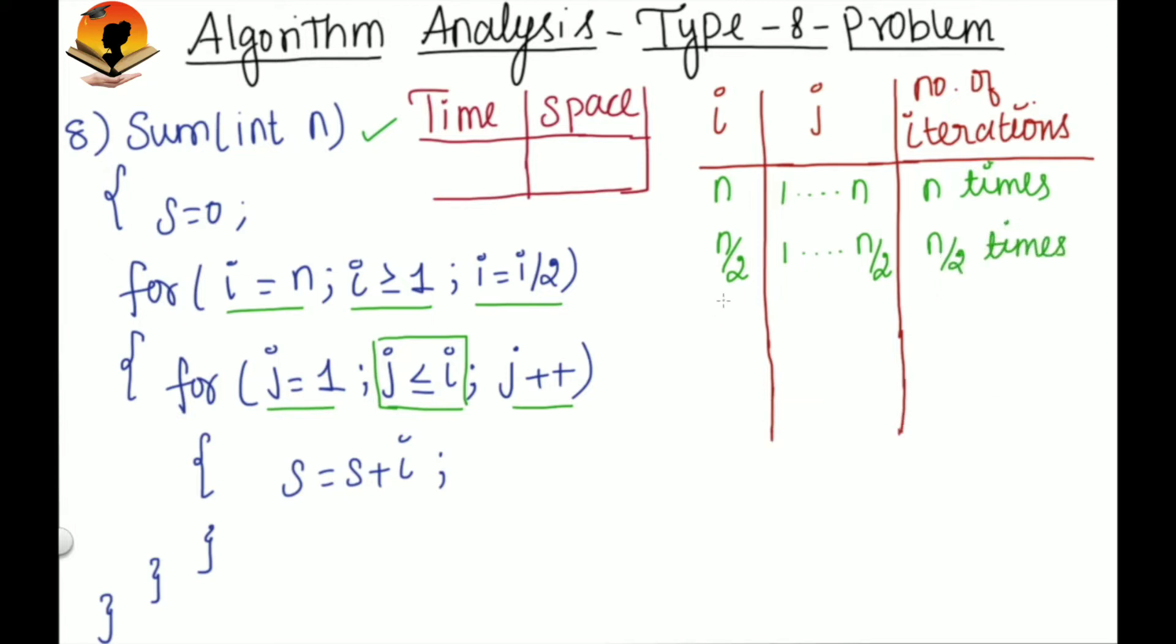And then again in the next iteration, i will be divided by 2, so n by 4. This will be continued till 1. You can write this 1 as n by 2 power k. And for the inner loop, the pattern will be 1 to n by 4.